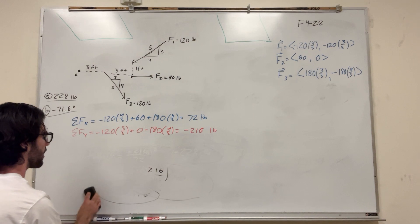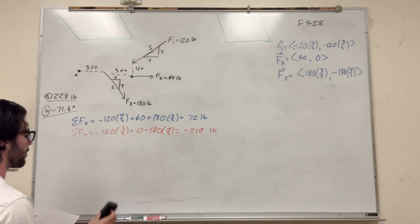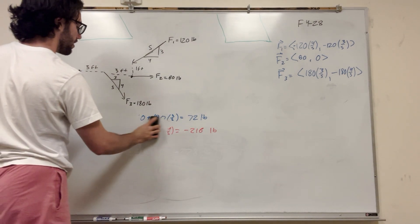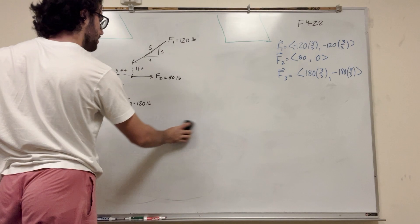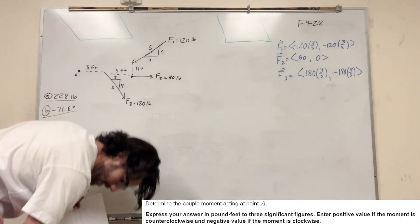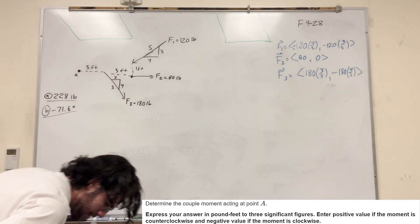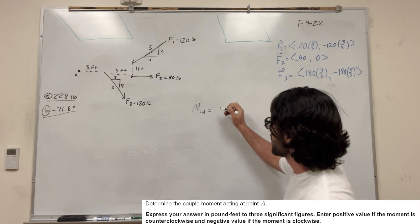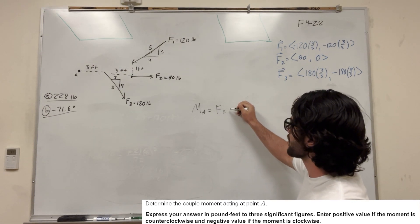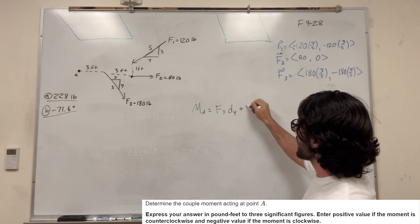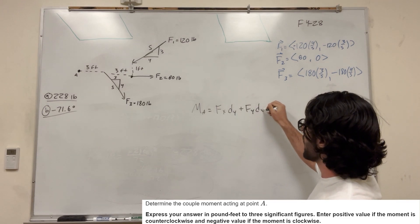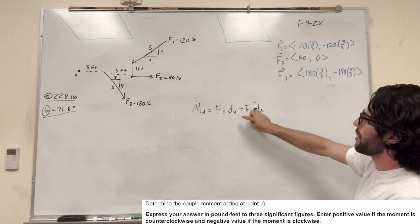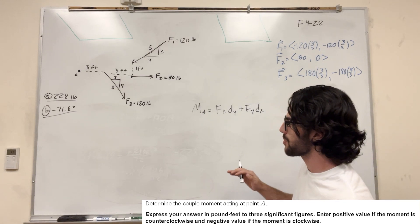Part C wants us to find the moment around A. In two dimensions, we're going to take the force in the x direction multiplied by the distance in the y direction, then add that to the force in the y direction times the distance in the x direction. We have the force x and force y already. We just need to find the distances for each one and add them all together.